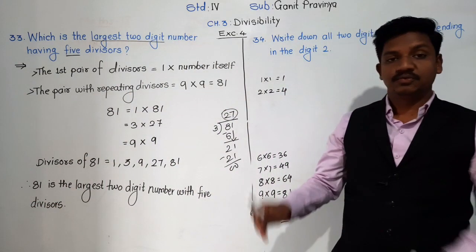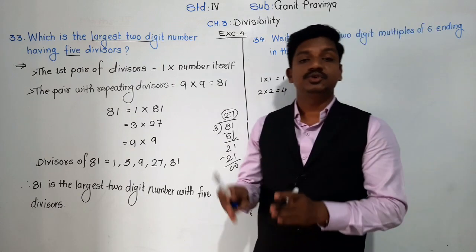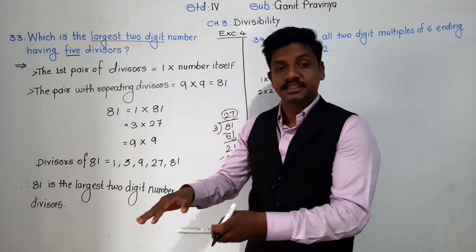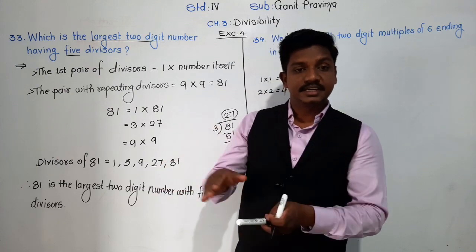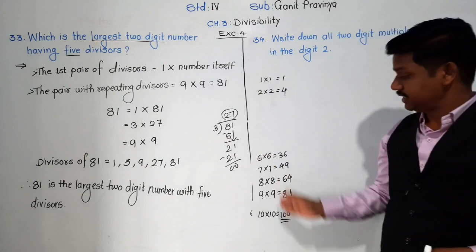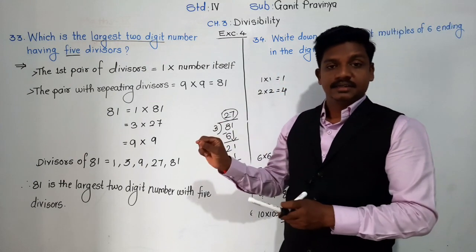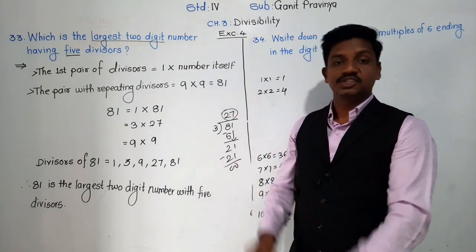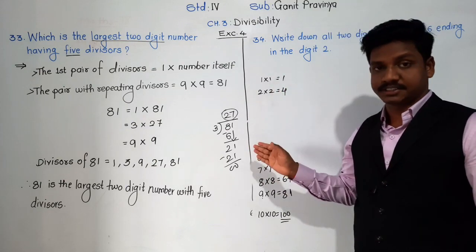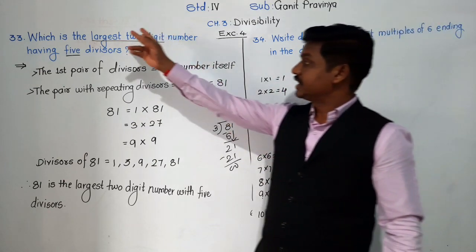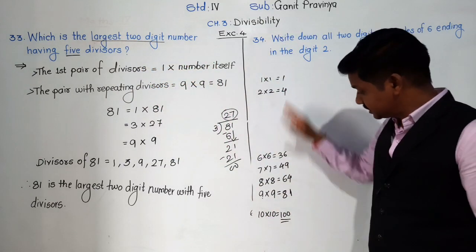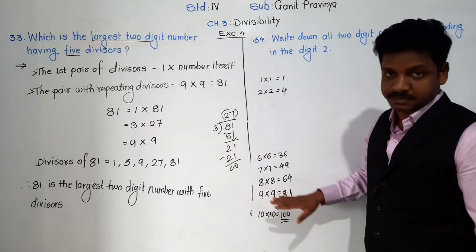Whenever you have to find a number with an odd number of divisors — 1, 3, 5, 7 — use this pattern of square numbers where one pair of divisors will be repeating. As we had to find the largest two-digit number, and the largest two-digit square number in this pattern is 81, we tried 81 and found it has exactly 5 divisors.